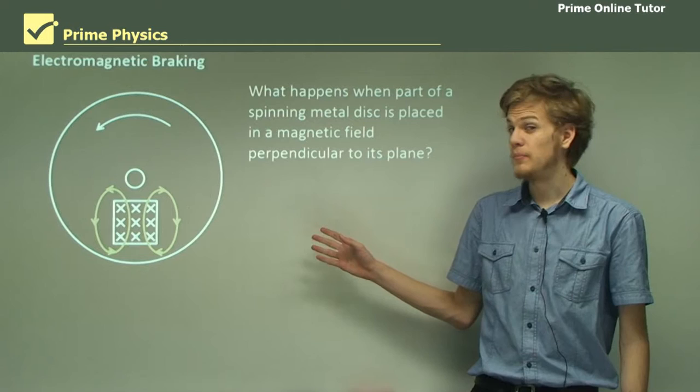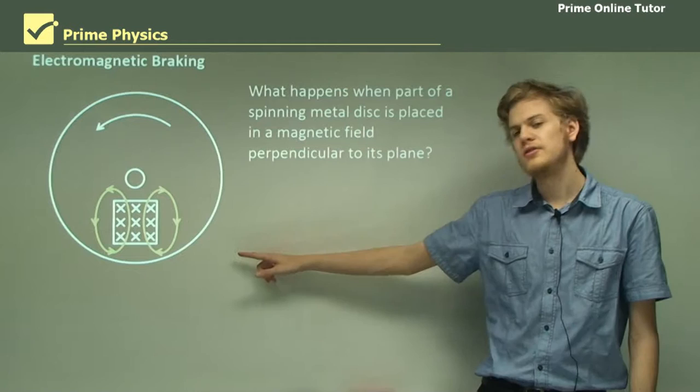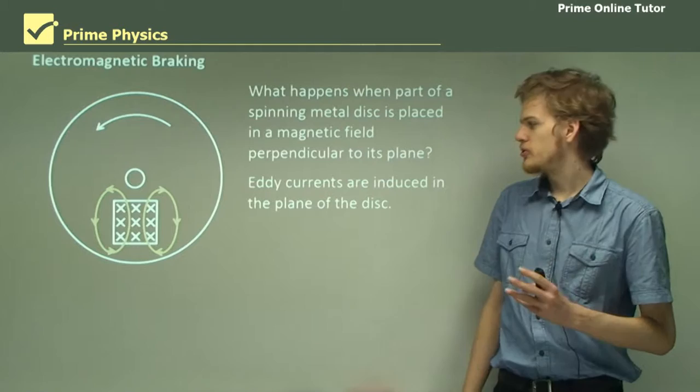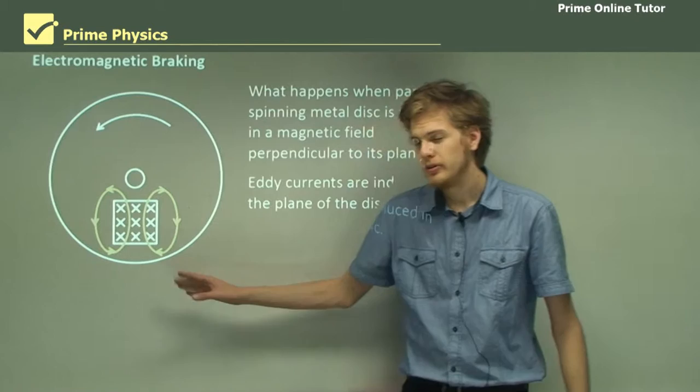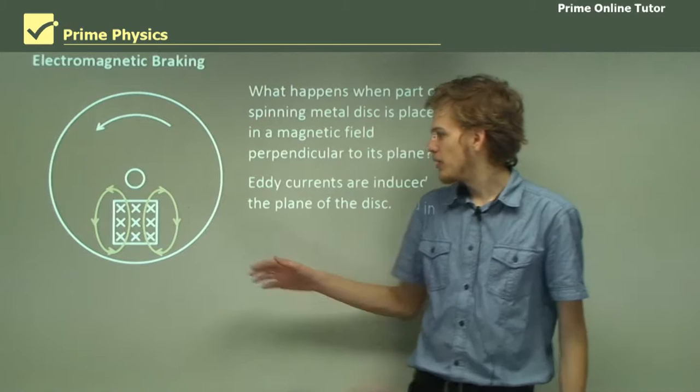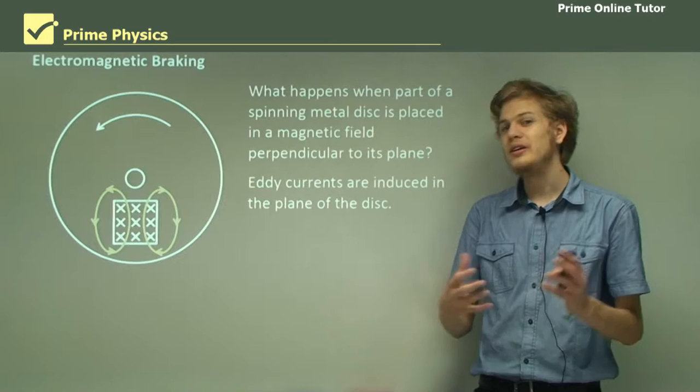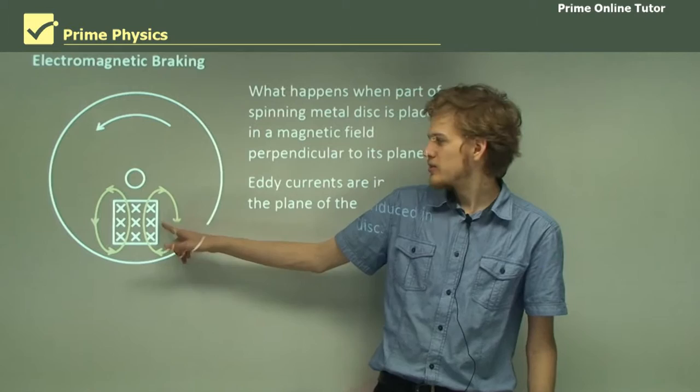So what happens if we have a fast moving wheel made of metal and we apply a magnetic field perpendicular to it, like we can see in this diagram over here? We'll get eddy currents induced in the plane of the disk. The part of the disk that is entering the magnetic field will produce eddy currents to oppose the sudden appearance of flux, and the parts of the wheel leaving the field will also create eddy currents, but these ones will try to regain the flux that they've lost.